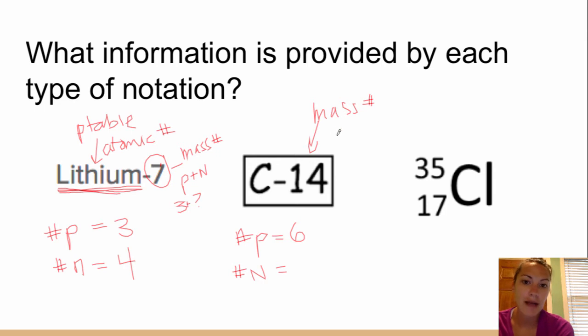So, again, my mass number is protons plus neutrons. So 14 must equal protons, six, plus my number of neutrons. So here, my number of neutrons must be eight. And so I can determine both the number of protons and the number of neutrons just by looking at the symbolic notation.